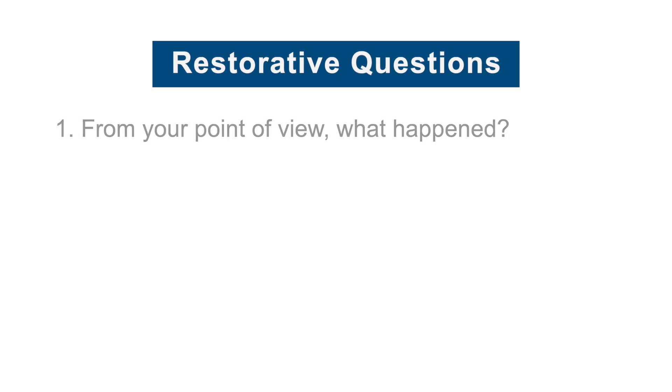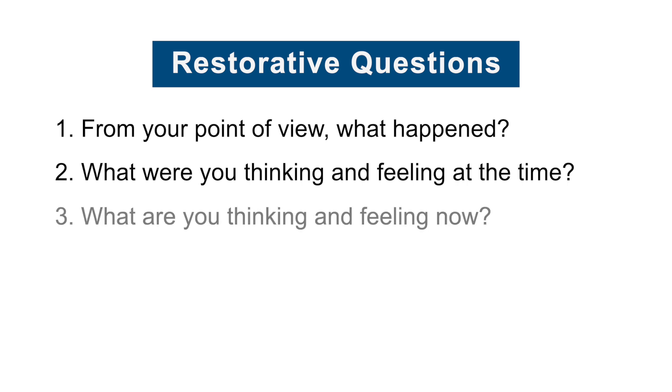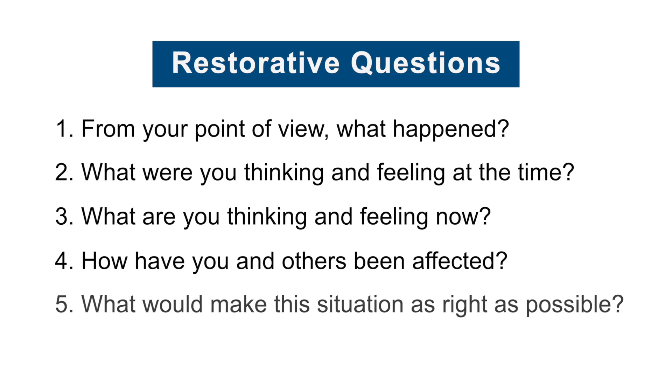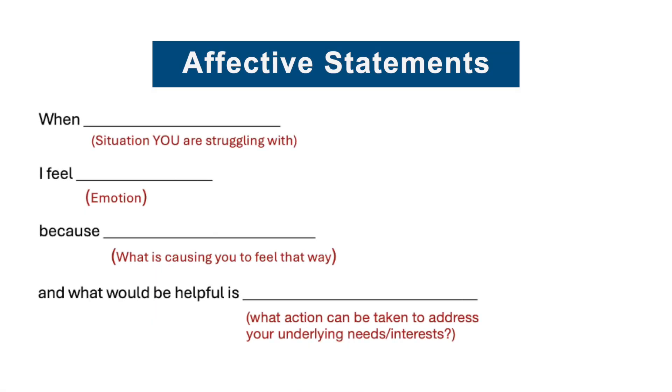Affective Statements and Restorative Questions — Segment 3. It's critical that we actually make time for that follow-up conversation. This is where you use what we call the restorative questions: one, from your point of view, what happened? Two, what were you thinking and feeling at the time? Three, what are you thinking and feeling now? Four, how have you and others been affected? And five, what would make the situation as right as possible? These are also the questions that could be used when the student goes to speak with someone outside of class, so that by the time you meet with them, they've already had an opportunity to process their responses.